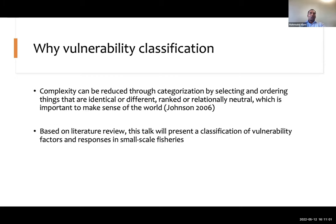The solution to this complex nature of vulnerability can be simplified through categorization — by selecting and ordering things that are identical or different, and ranking them in a rationally neutral way, which is important to make sense of the world. Based on the literature review, this talk will present the classification of vulnerability factors and responses in small-scale fisheries.